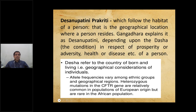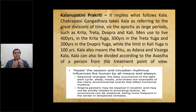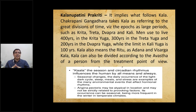Kala Anupatini Prakriti: Chakrapani and Gangadhar Raya both take Kala as a reference to great divisions of time, such as epochs — Krita Yuga, Dwapara Yuga, Kali Yuga. Men used to live 400 years in Krita Yuga, 300 years in Treta Yuga, 200 years in Dwapara Yuga, and in Kali Yuga the lifespan is 100 years. Kala also means Daru as Adana and Vissaraka.